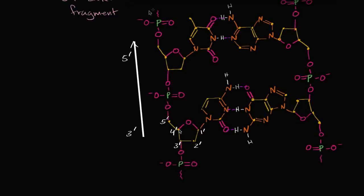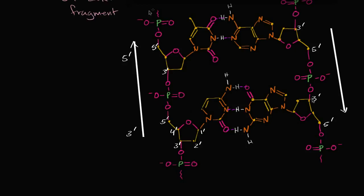This phosphate connects to the three prime, then we go to the five prime, which connects to a phosphate. This connects to a three prime, then we go to the five prime, connects to a phosphate. Now on this end, as we said, it's anti-parallel — parallel, but oriented the other way. So this is the three prime, this is the five prime, this is the three prime, this is the five prime. These two strands are parallel to each other but oriented in opposite directions.